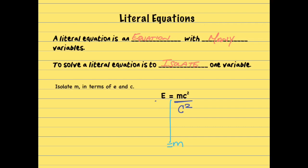And what I do to one side, I do to the other. What is going to happen is the C square and the C square cancel. My m is alone. And my answer would be E over C to the second power. This will be my answer.